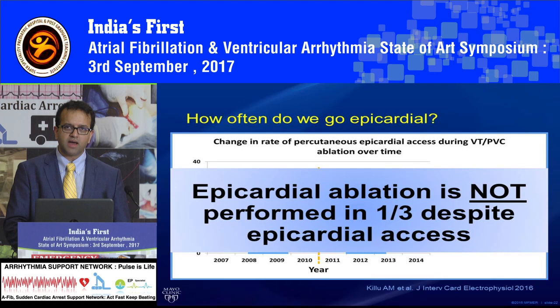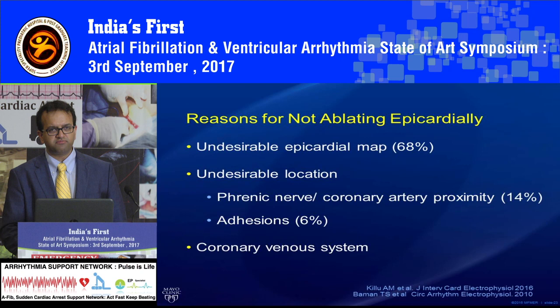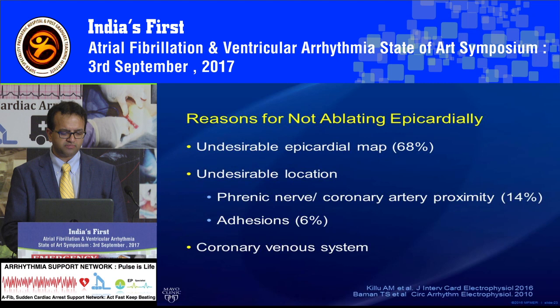Even if you gain access and only perform mapping without ablating, that is still very helpful — at least you know that region is not the right target, and you can look elsewhere for the source of VT. Some reasons we might access the epicardial space but not ablate include: the map is not helpful, coronary arteries or the phrenic nerve prevent safe ablation, or prior sternotomy, surgeries, or ablations have created pericardial adhesions that prevent safe catheter movement.